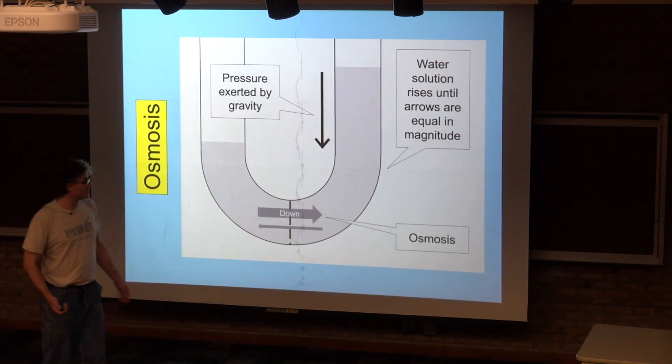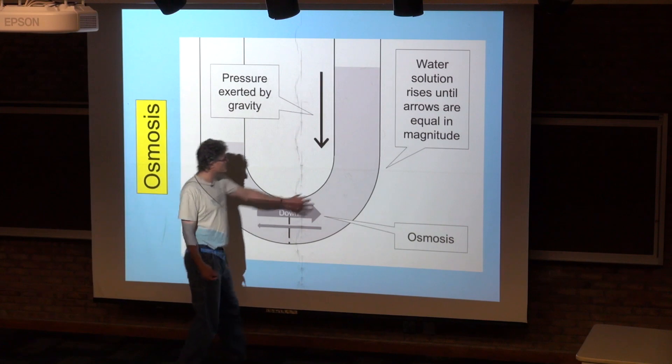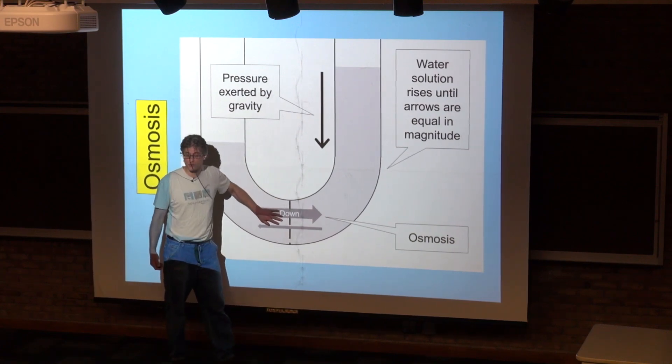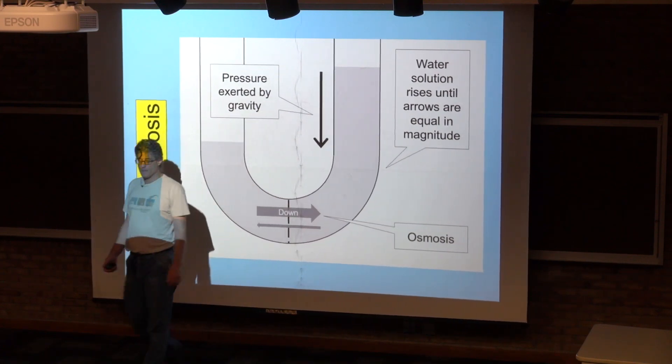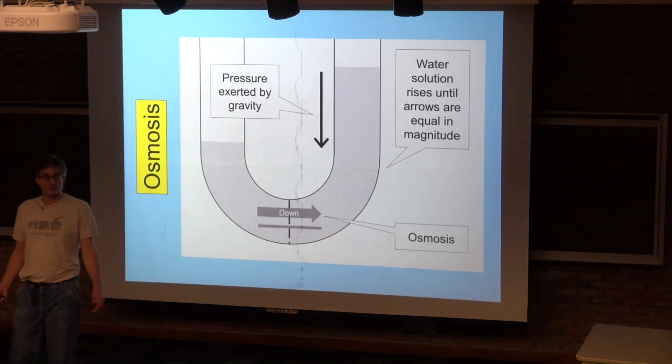We'll have a dynamic equilibrium. In fact, the amount of pressure that is necessary to counteract the movement of water from one side to the other by osmosis is called osmotic pressure.